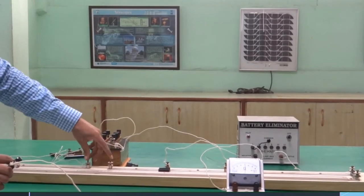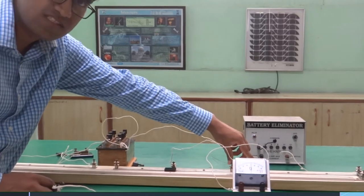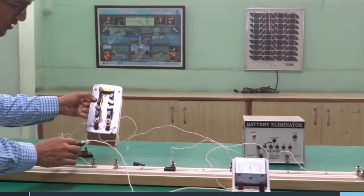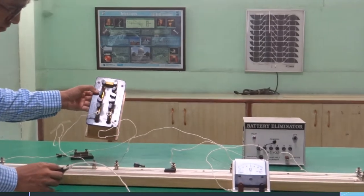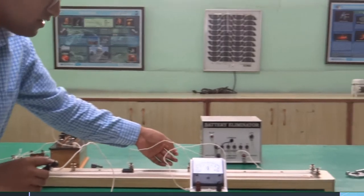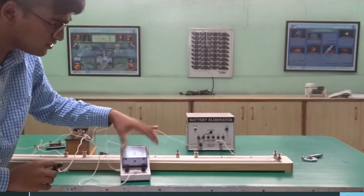These are the two slots for the unknown resistance. Here what we are doing is, in one of the gaps we have used a resistance box and in the second gap we have used a resistance wire. You can see over here.